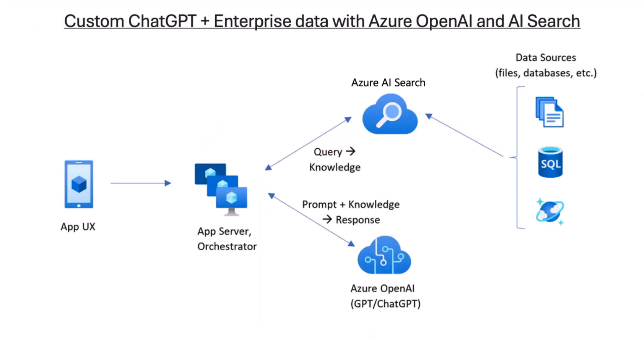I want to start with a very popular scenario in the custom ChatGPT and custom Copilot world. This is a scenario where we build our custom ChatGPT experience — we build the app UX, which can be a chat experience, and then we build our own app orchestrator. It can be any type of orchestrator you prefer, and we are also responsible for integrating Azure OpenAI or any LLM you prefer.